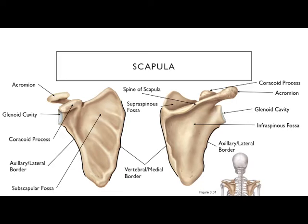One way to distinguish the acromion from the coracoid process: coracoid is named after a raven's skull, so it looks like a little bird head — like a bird resting on your shoulder. You can also just remember it's more anterior. The lateral border of the scapula is also called the axillary border — 'axillary' means armpit — because it's right below your arm.